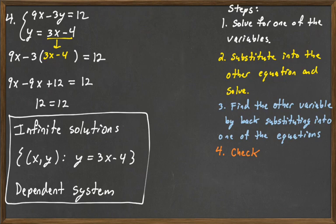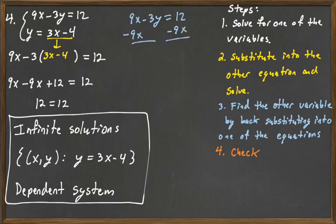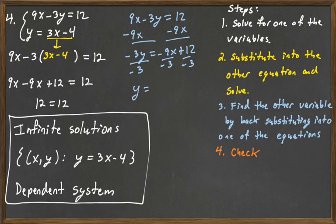We can verify that these are the same line. Take 9x minus 3y equals 12 and solve for y: subtract 9x from both sides to get negative 3y equals negative 9x plus 12, then divide by negative 3. So y equals 3x minus 4 — exactly the same. Any point on the line satisfies both equations, because they are the same equation.